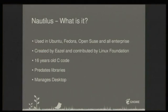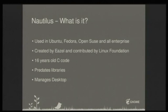So what is Nautilus? Nautilus is the file manager used in the most prominent distros like Ubuntu, Fedora, and most importantly in its enterprise parts. It was created by Eazel, a company created in 1999. They had 15 developers and worked on it for two years. In 2001, after two years, they released Nautilus and then closed. So it was not a very successful company, but in two years with 15 developers they made a nice product.